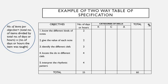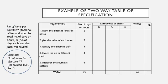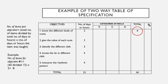To determine the number of items per objective, we have the following formula: total number of items divided by total number of days or hours, then multiplied by the number of days or hours the content was taught. For example, for objective number one: 60 divided by 15, then multiplied by 2 (the number of days objective one was discussed), equals 8. So there should be 8 items covering objective number one.